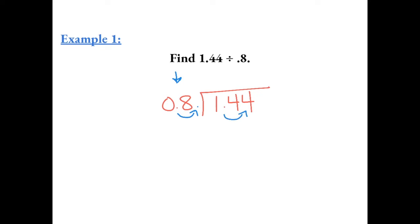If I do that to the outside number, then you also have to do the same thing to the inside number. Now the outside number is the whole number 8 and the inside number becomes 14.4. Now we divide regularly. 8 goes into 14 one time which gives us 8. Then we have 6, bring down the 4. 8 goes into 64 eight times. Bring up the decimal, so our final answer is 1.8.